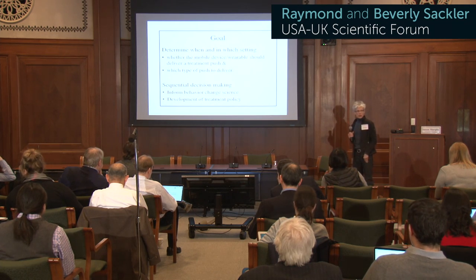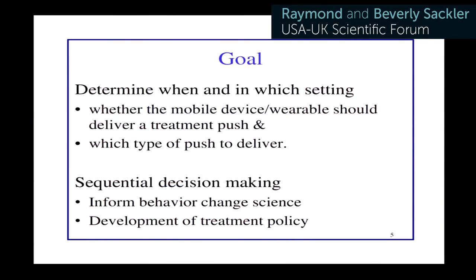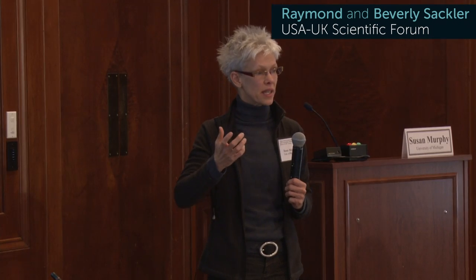The way a behavioral scientist might state this is: I want to understand in what settings and at what times this treatment should be pushed to the user. That, of course, is a sequential decision-making problem. But there are two sides to that — you both want to inform the behavioral science, as well as developing a policy that tells you in what setting and when to provide a treatment. Both of these are operating all the time, and that has to do with the expense of these studies.